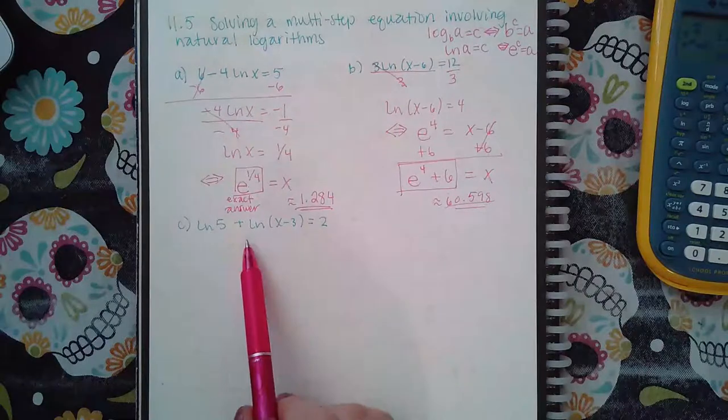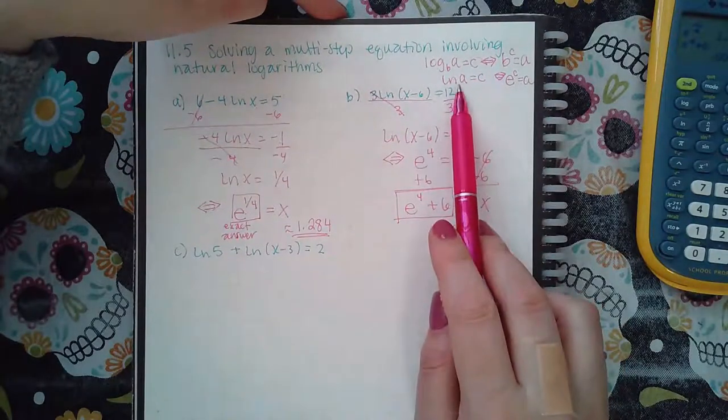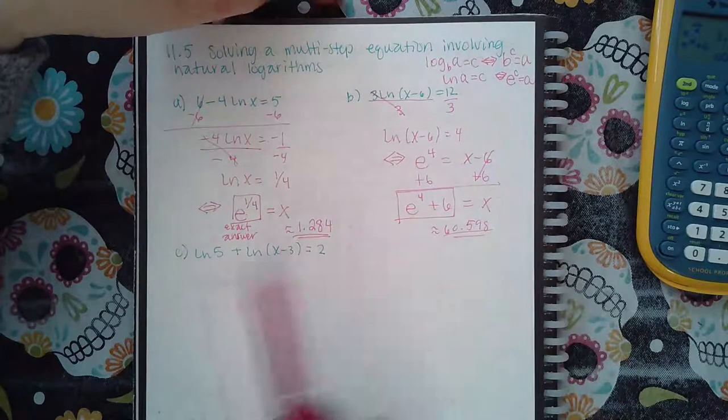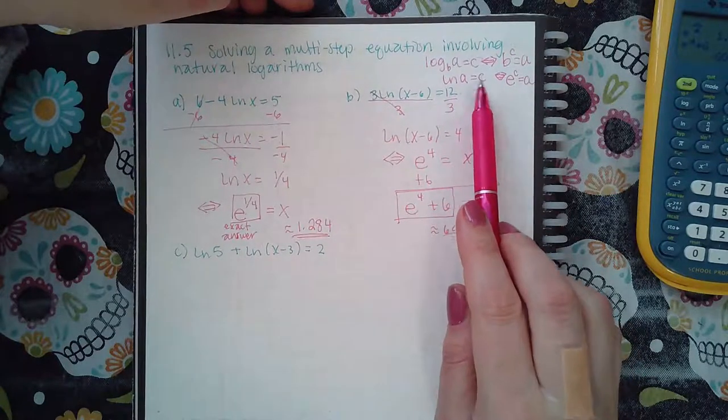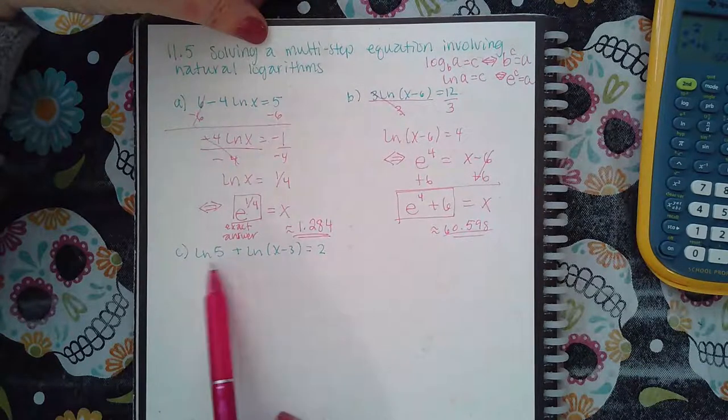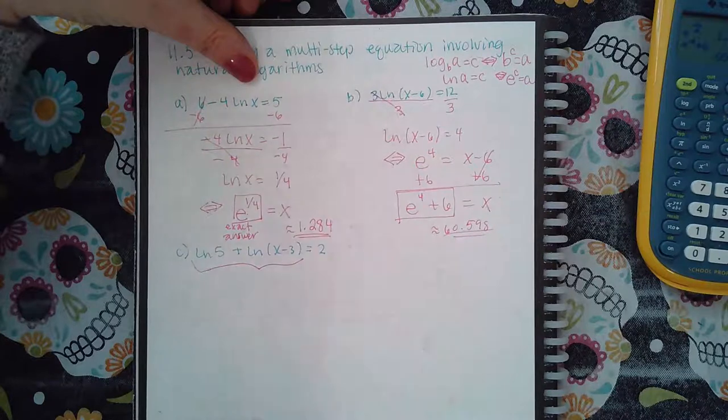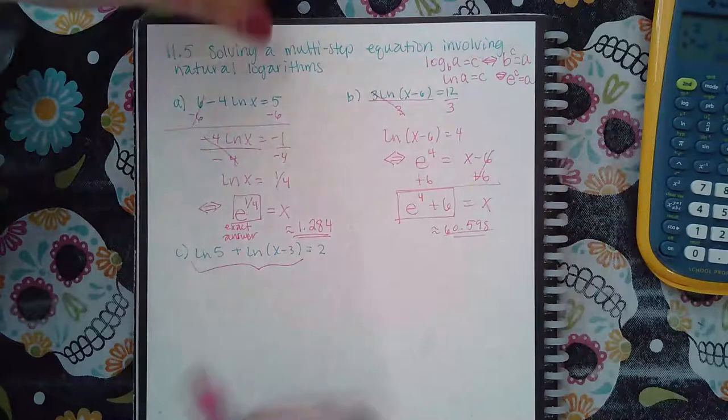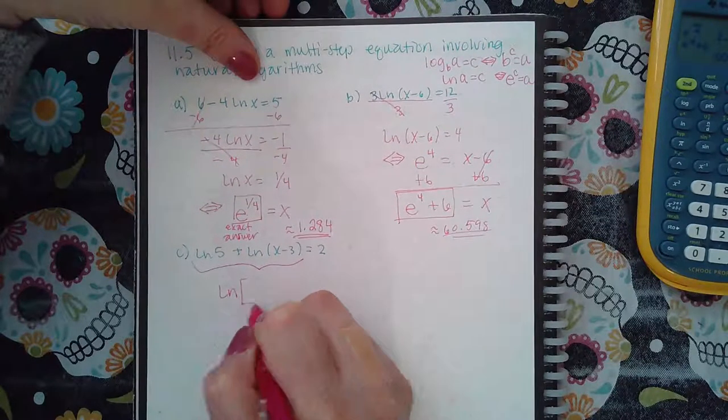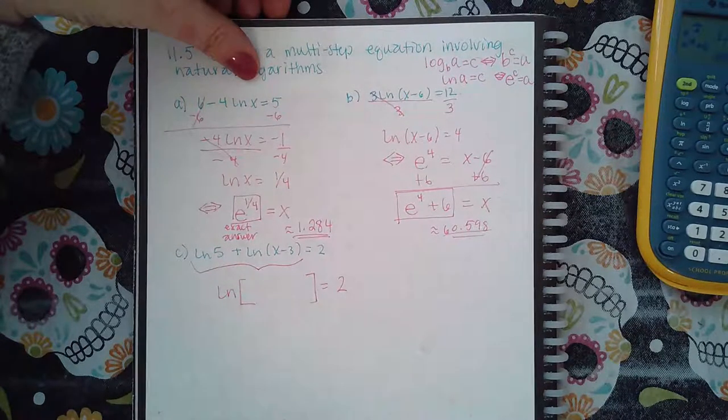Now here we have a problem because I can only use this rule if I have just one logarithm equal to a number, and over here I don't have just one logarithm equal to two. So I have to combine these using our properties so that it does say ln of just one argument equal to two.